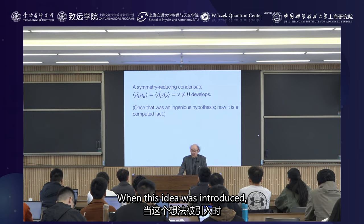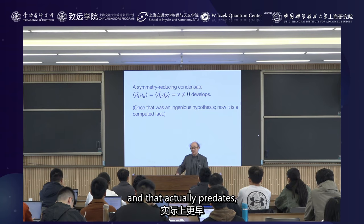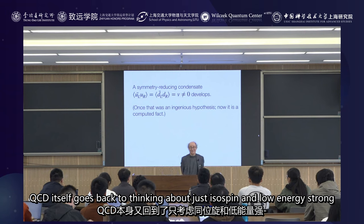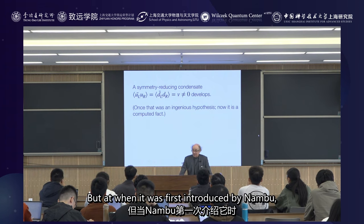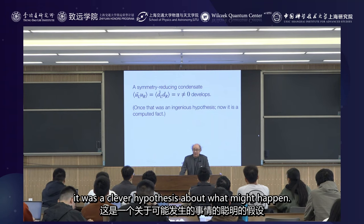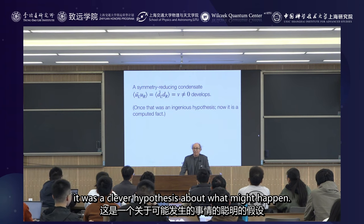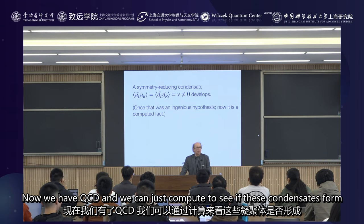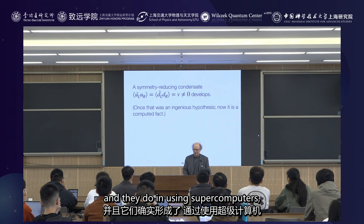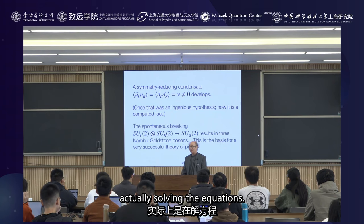When this idea was introduced — which actually predates QCD itself, going back to thinking about isospin and low-energy strong interactions — it was introduced by Nambu, who got the Nobel Prize for this line of work. It was a clever hypothesis about what might happen. Now it's a computed fact. We have QCD, and we can compute to see if these condensates form, and they do, using supercomputers actually solving the equations.